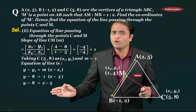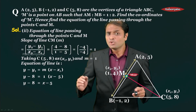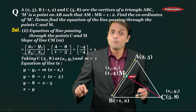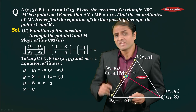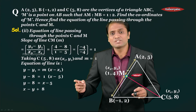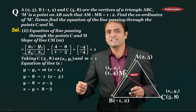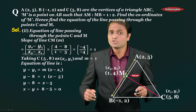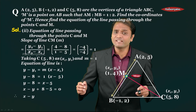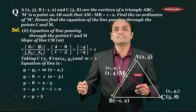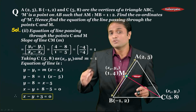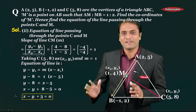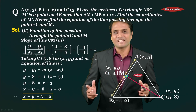Gathering all terms on one side: x - y - 5 + 8 = 0, which gives x - y + 3 = 0. This is the equation of line CM and the second part of our final answer. I hope you understood this sum. Thank you.